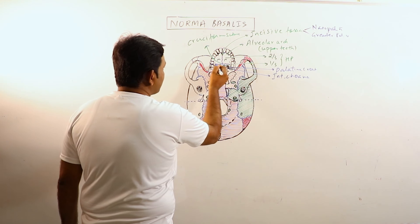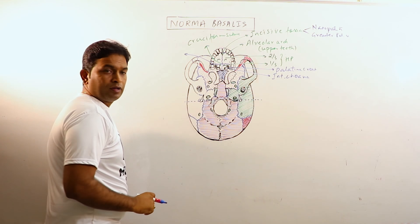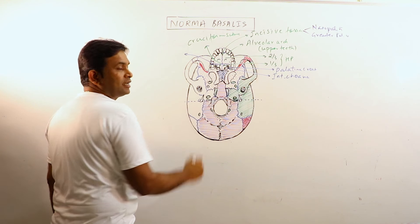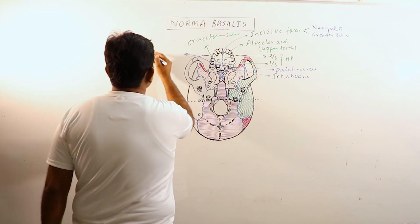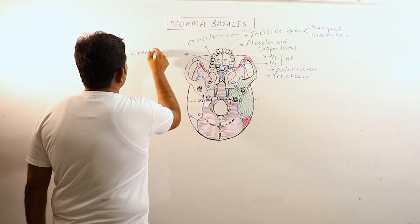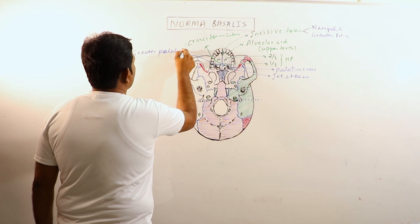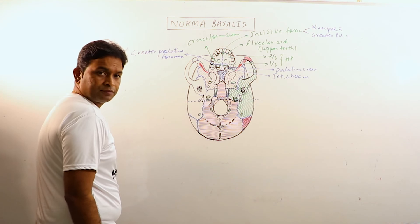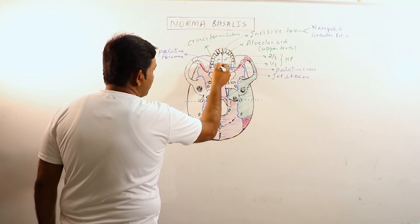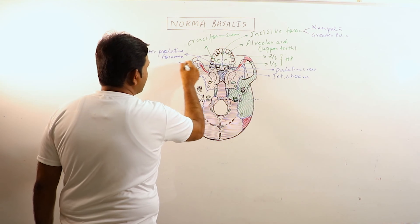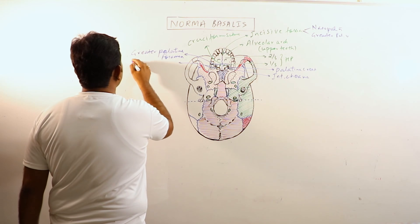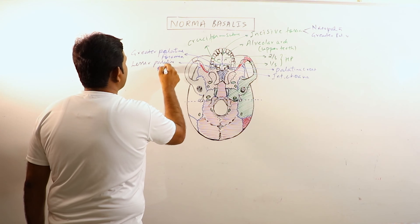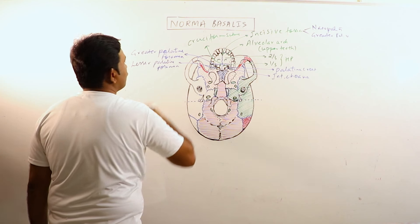Now we can observe a foramen here. This foramen which is just posterior to the palatomaxillary suture is known as greater palatine foramen. Behind the greater palatine foramen there may be two or three lesser palatine foramina.